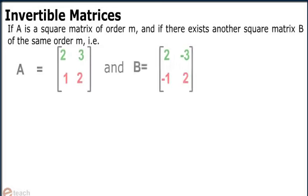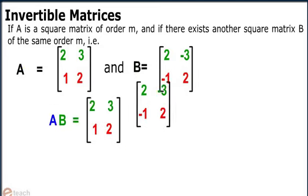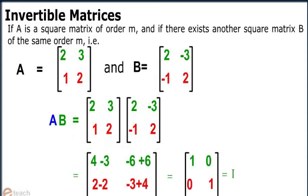if A equals 2, 3, 1, 2, and then B equals 2, minus 3, minus 1, 2, and the product A into B turns out to be an identity matrix, then B is the inverse of matrix A.